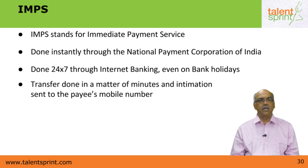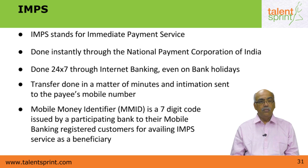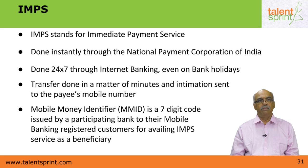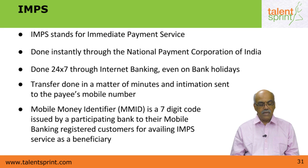IMPS is done electronically: the account with one bank is debited, the other bank gets the credit immediately through the electronic fund transfer system and in turn credits the payee's account — all in a matter of minutes. Mobile Money Identifier or MMID is a 7-digit code issued by a participating bank to their mobile banking registered customers for availing IMPS service as a beneficiary. Every member of a bank offering IMPS will have this 7-digit code called the mobile money identifier, used in IMPS transactions.